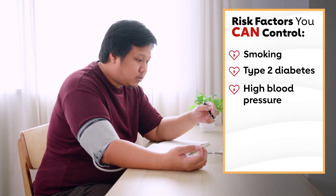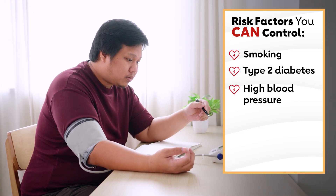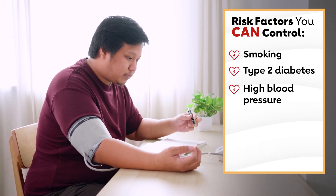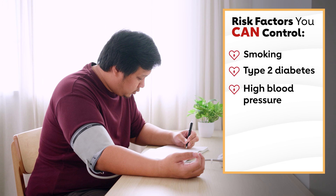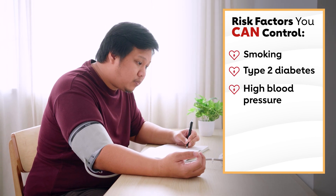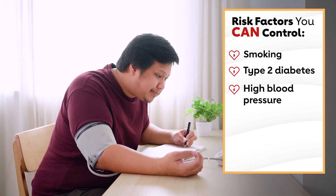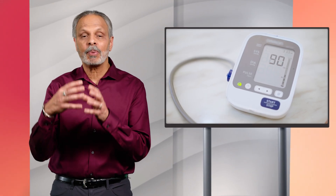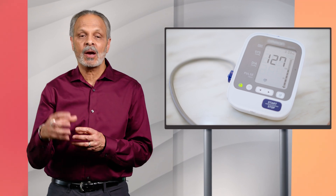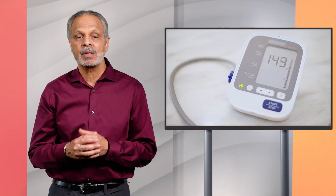High blood pressure. They call high blood pressure the silent killer because it has no symptoms. It can lead to PAD because having high blood pressure makes it easier for plaque to form, which can narrow your arteries. But you can work with your doctor to monitor and control your blood pressure.